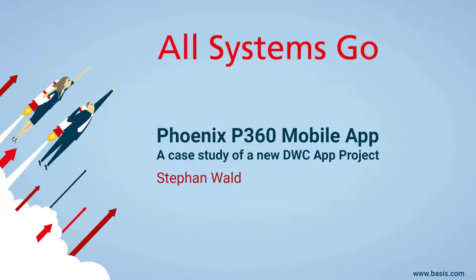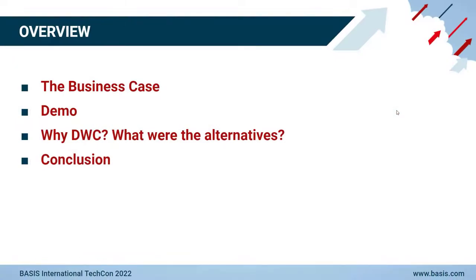Now we will have a look at the BBJ Dynamic Web Client app in action. One of the first apps that the Basis professional services team developed for the Dynamic Web Client is called P360, created in collaboration with the Canadian ERP vendor Phoenix Business Systems out of Quebec. After having a closer look at what the app does and why Phoenix decided to work with Basis to create it, I will give you a short live demo. I will also put a focus on the alternatives that had been considered and explain why Basis and Phoenix decided together to implement it in the Dynamic Web Client.